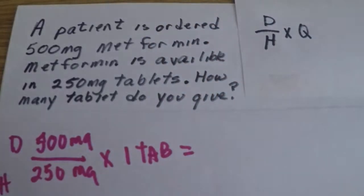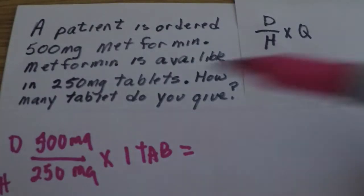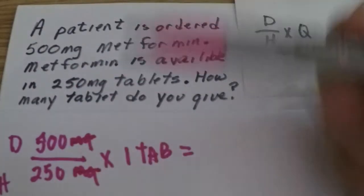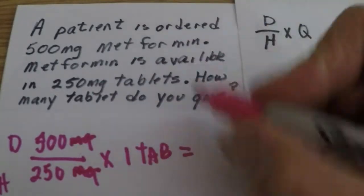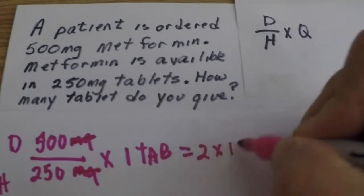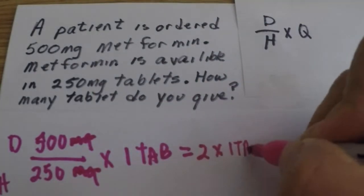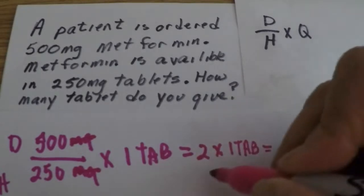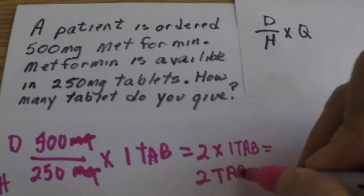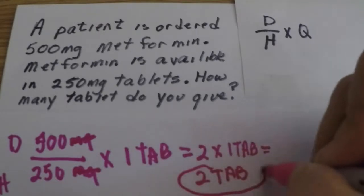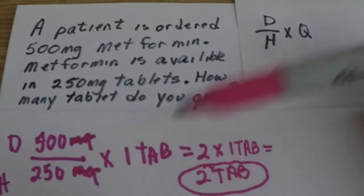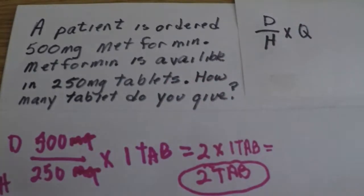Let's do the math. Cancel out milligrams — 500 divided by 250 is 2, times one tablet equals two tablets. That's what we're going to give. Desired over have times quantity. Let's try a couple more.